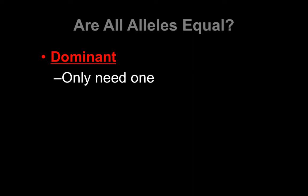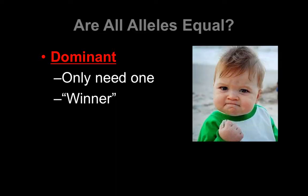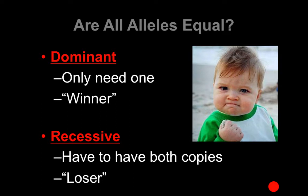Not all alleles are created equal. Some alleles we call dominant, meaning that you only need one copy — and since you have two copies of every gene, if one of those alleles is dominant, that's what's going to show up. I like to think of them as winners or bullies — if they're there, they show up. On the other hand, some alleles are recessive, meaning that unless the dominant is absent, they don't show up. They lose when they go head to head with a dominant allele.